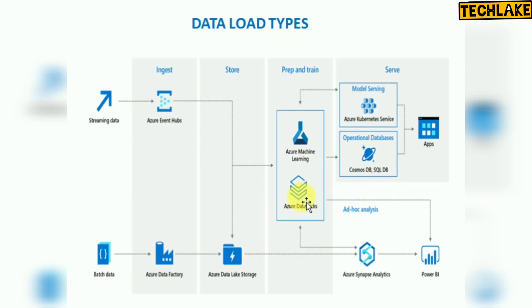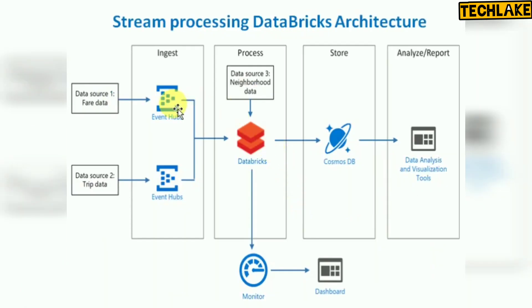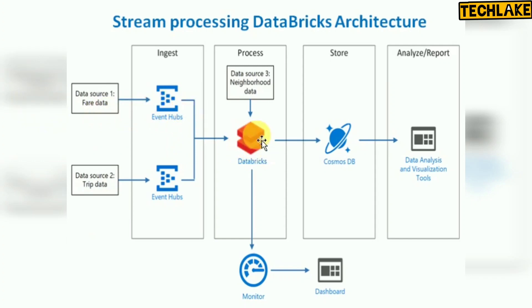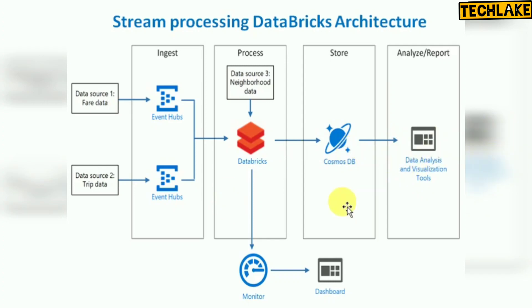Let's see an example of live streaming processing. If you have two data sources, Azure Event Hubs connects to both, gets the data, and stores it into Azure Databricks. There you create notebooks, schedule them, and monitor all jobs in a dashboard. Finalized data can then be moved to any database or directly connected to analytics tools like Power BI or any visualization tool.